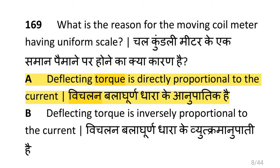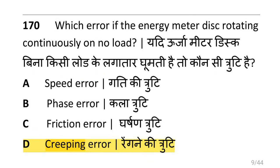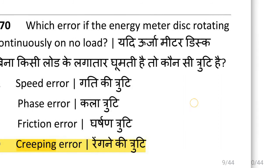What is the reason for the moving coil meter having uniform scale? That is because deflecting torque is directly proportional to the current. Which error occurs if the energy meter disc rotates continuously on no load? That is creeping error.